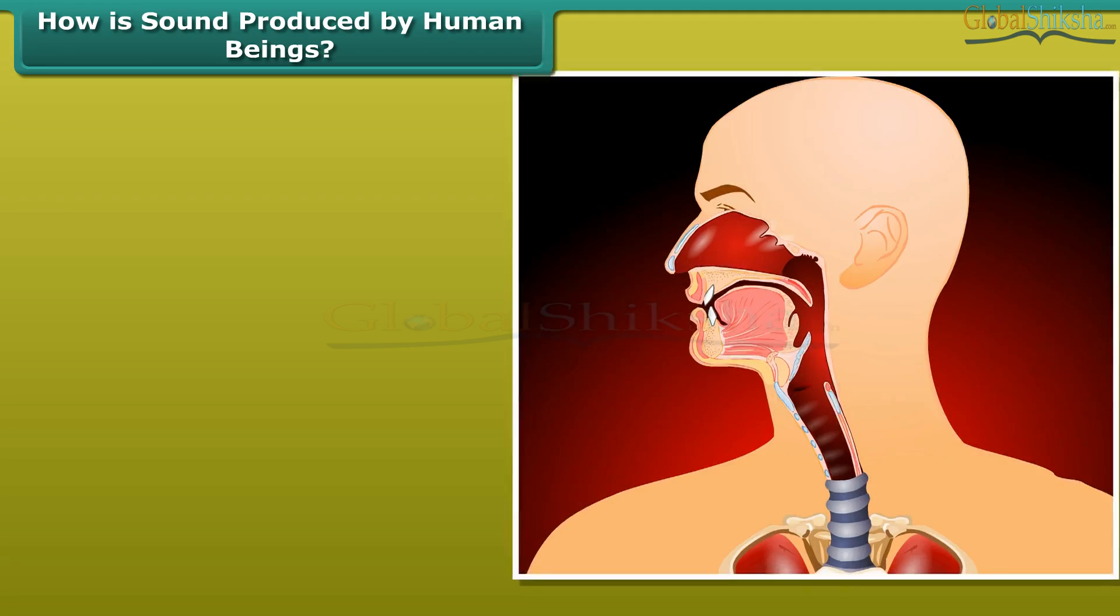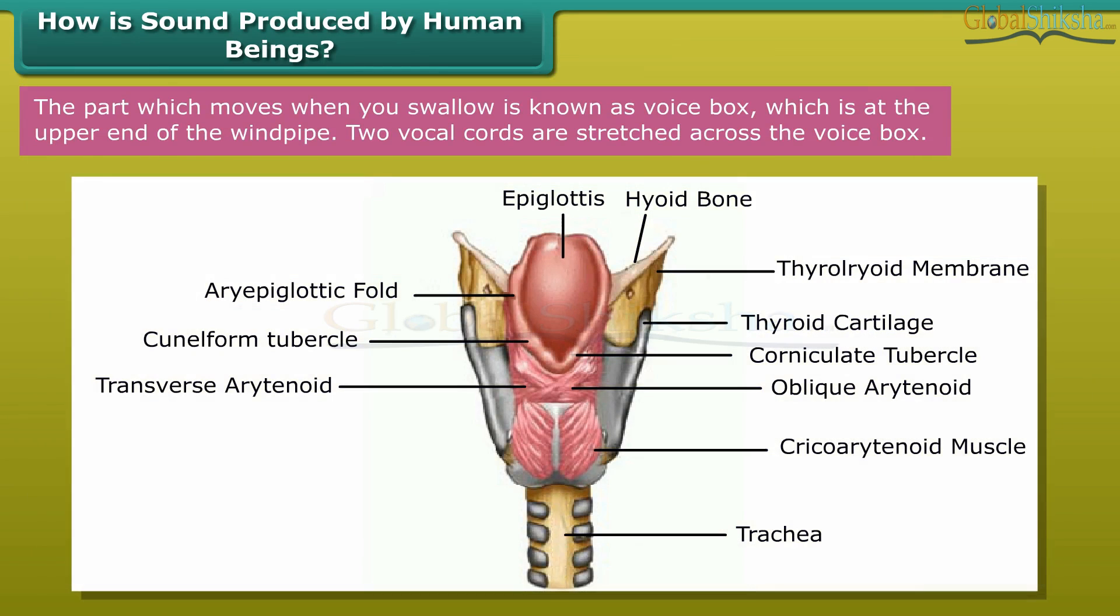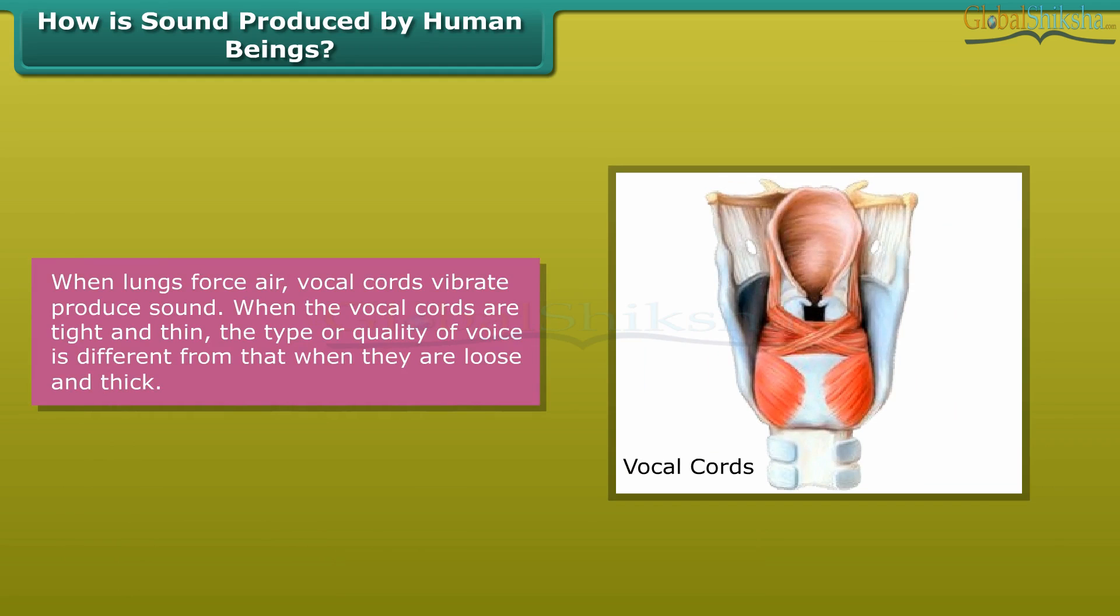How is sound produced by human beings? Voice box in human. Sound is produced by the voice box or the larynx in humans. The part which moves when you swallow is known as voice box, which is at the upper end of the windpipe. Two vocal cords are stretched across the voice box. When lungs force air, vocal cords vibrate, producing sound. When the vocal cords are tight and thin, the type or quality of voice is different from that when they are loose and thick.